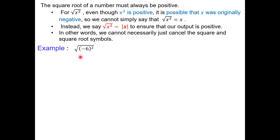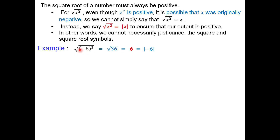Let's make this concrete with numbers. Square root of negative 6 squared — notice the negative 6 is in parentheses. So if you square that, you get 36. This is asking: what positive number squared gives you 36? The answer is 6. So that's how you answer that square root question. And if the original was negative 6, the radical gives you the absolute value of negative 6, which is 6. Even though we squared negative 6 to get 36, the answer is always positive for square roots.